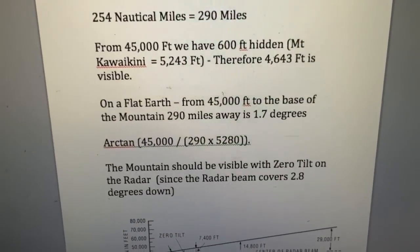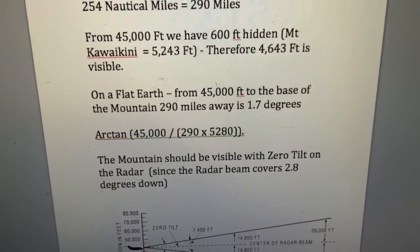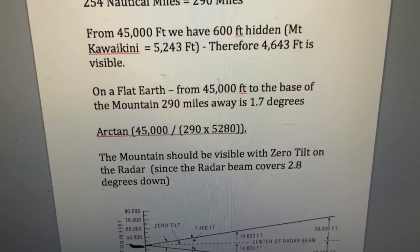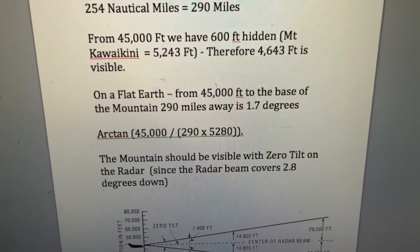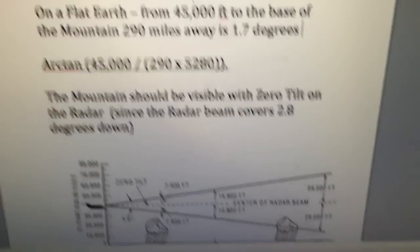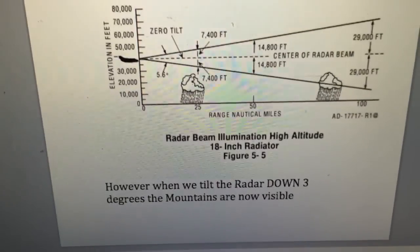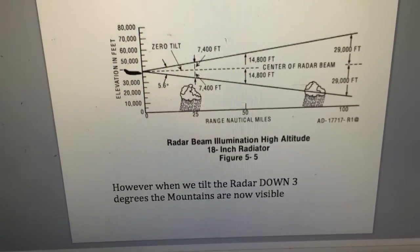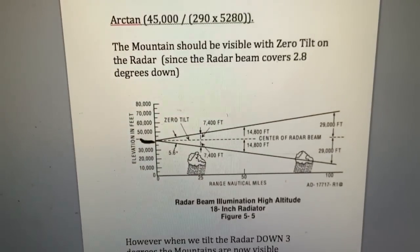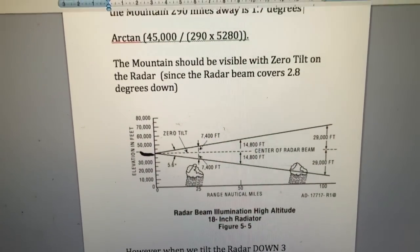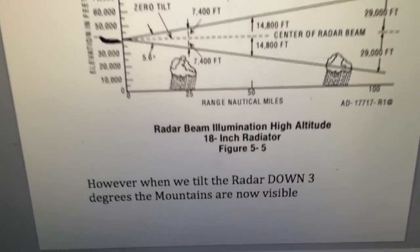Remember, the radar at zero tilt is looking down 2.8 degrees — so why can't it see the mountain? The base of the mountain is only 1.7 degrees down, and the radar is covering 2.8 degrees down. On a flat Earth we should be able to see that mountain with zero tilt, but we can't. We can only see it when we tilt the radar down three degrees, because the Earth's curvature is causing even the top of the mountain to be greater than three degrees down from eye level. That's why the radar beam looking at 2.8 degrees down can't see it.